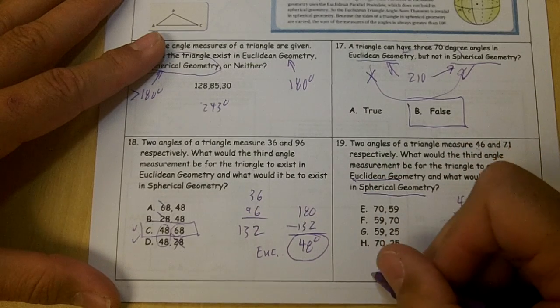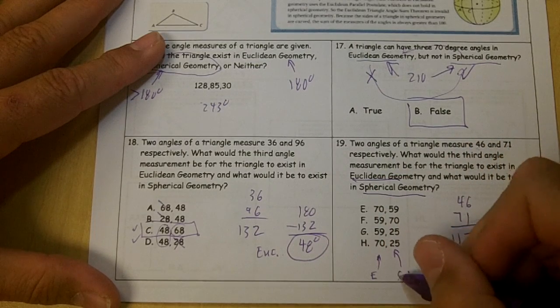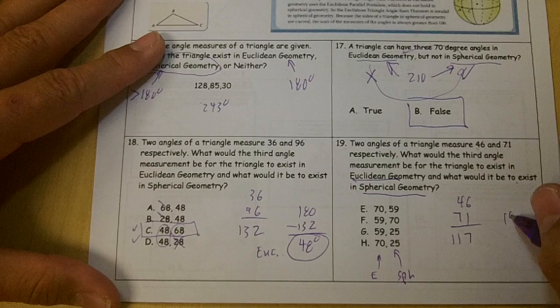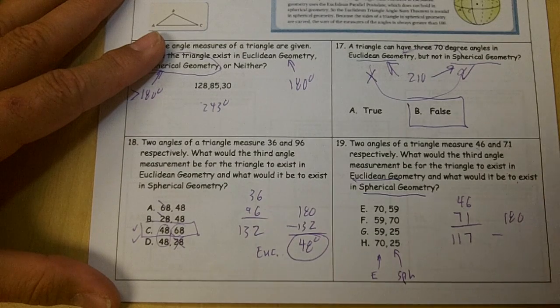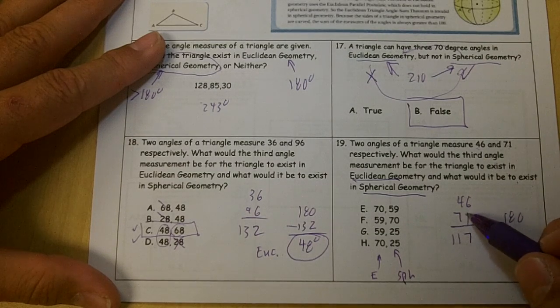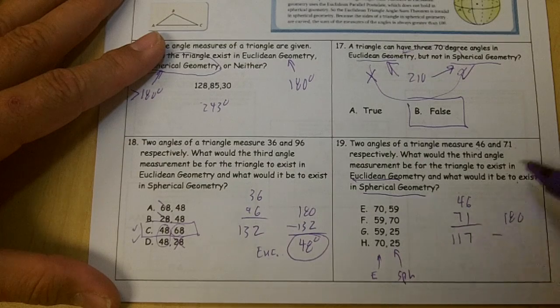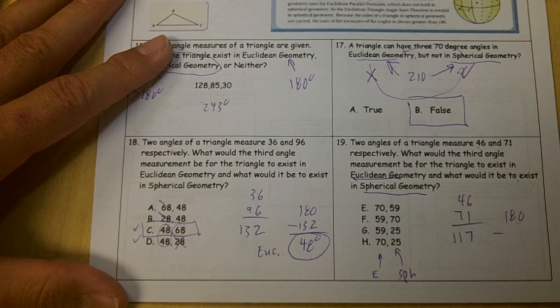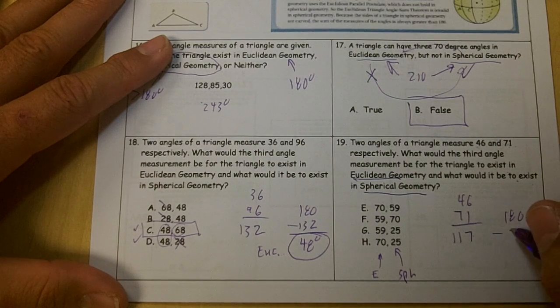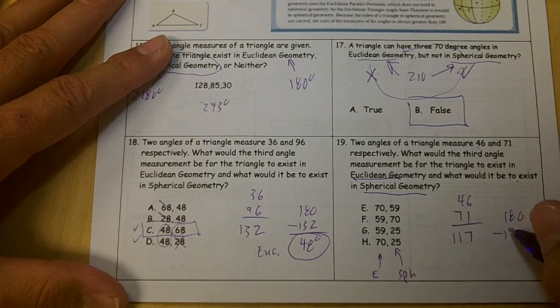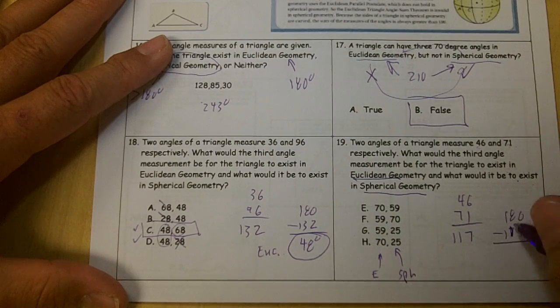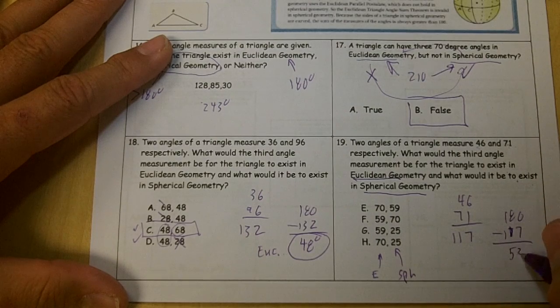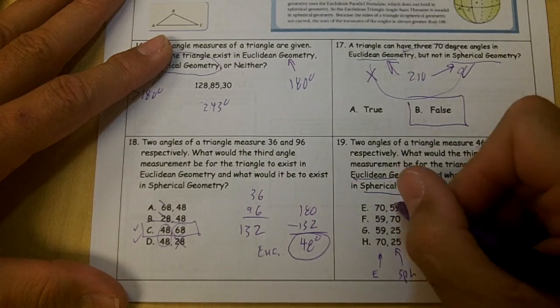So the first one is Euclidean and the second one is spherical. If you subtract this from 180, did I add those right? 46 and 71? Yeah. This is wrong because they don't add up. Subtract from 117 and you would get 53. Let's make the 59s 53.